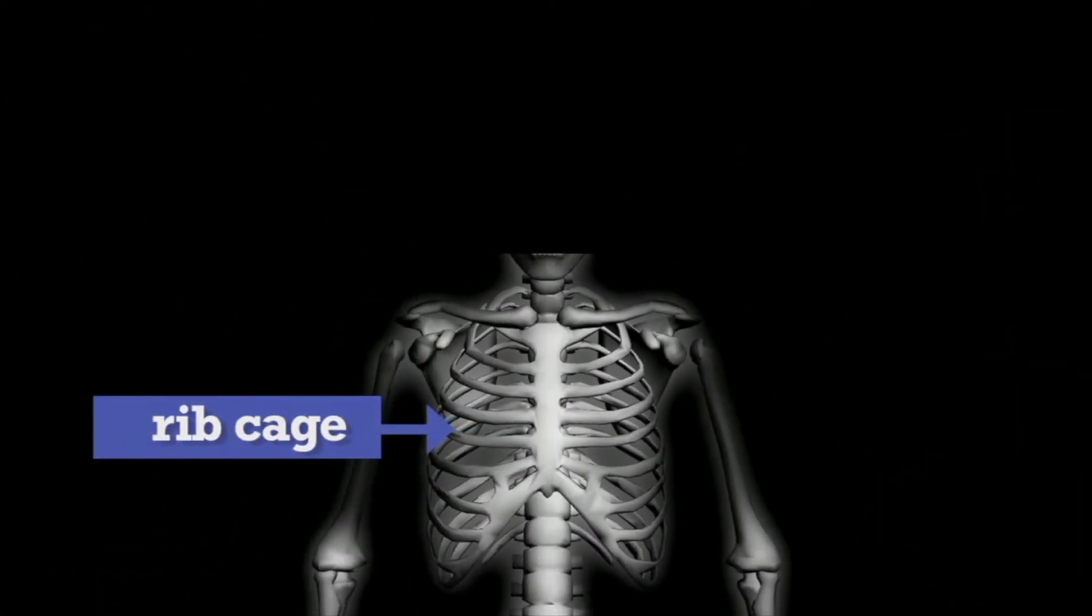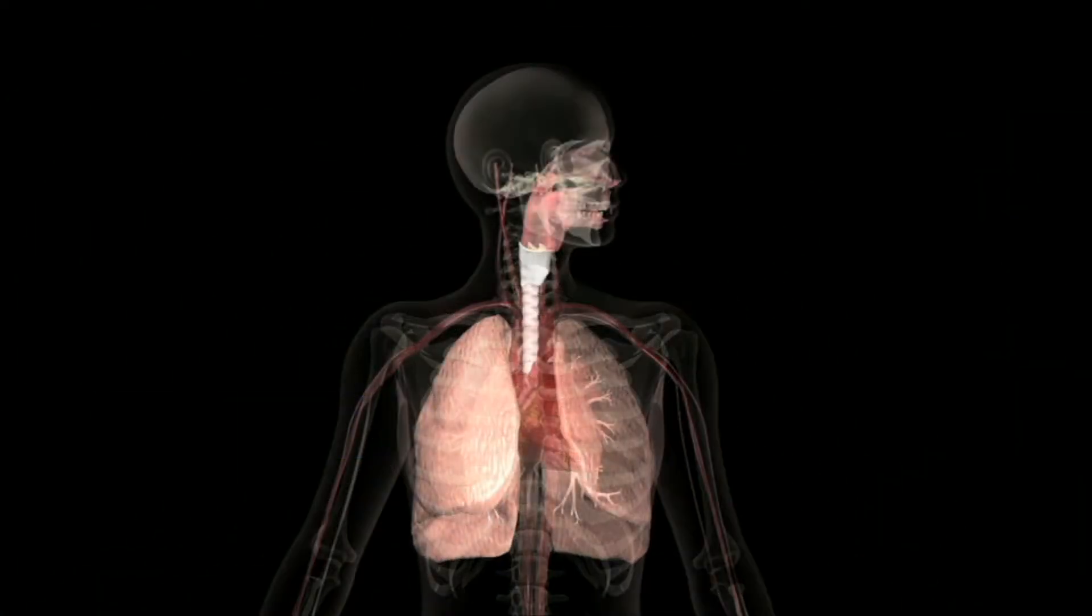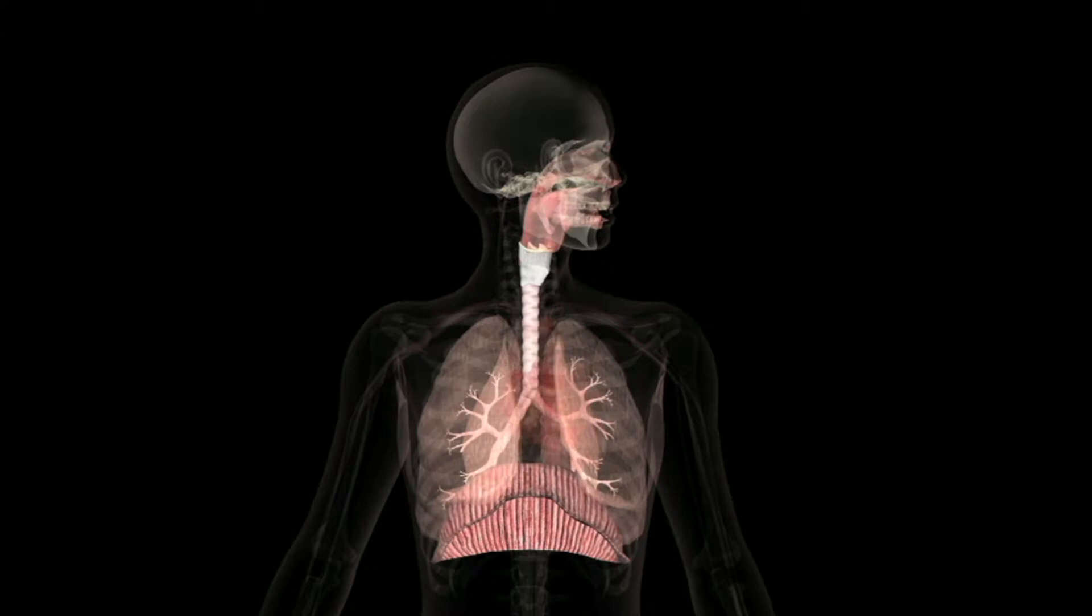The ribcage provides protection of the heart and lungs and plays an important role in breathing. The primary function of the axial skeleton is protection of internal organs.